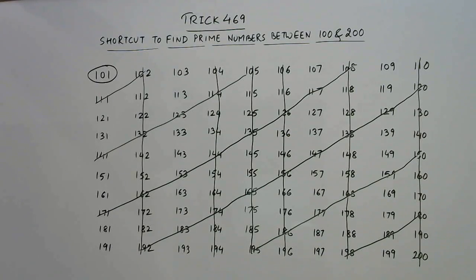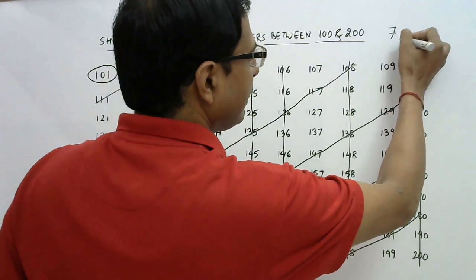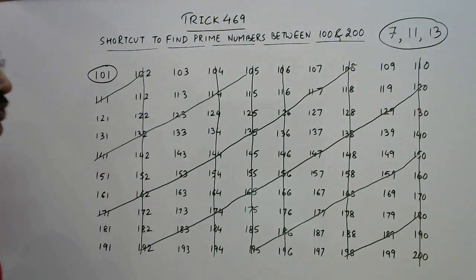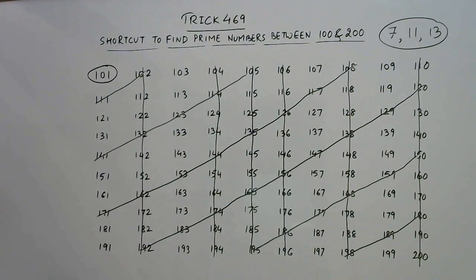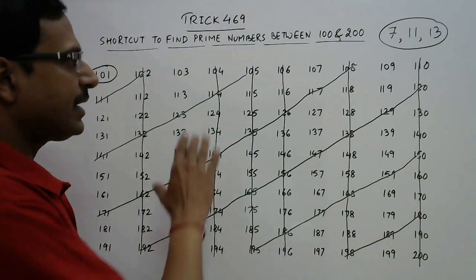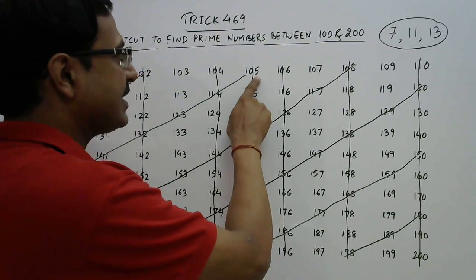The method so far is very easy. The final step is to strike off the multiples of the three numbers 7, 11, and 13, as these are the numbers whose multiples still exist in this matrix. For 7, start with 105 because 15 times 7 is 105. Keep on adding 7 to each subsequent multiple of 7. So 105 plus 7 is 112 — it is already struck off.